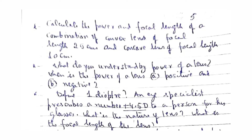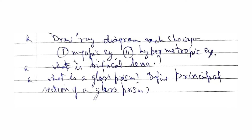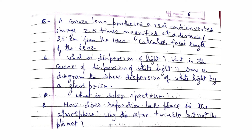A specialist prescribed +4.5 D lenses for a person — what is the nature of the lens and what is the focal length? Define myopia and hypermetropia: how are these defects of the eye caused and how can they be corrected? Define the power of accommodation of the human eye and the least distance of distinct vision. State the function of the following parts of the human eye: cornea, sclerotic, retina, iris, pupil, ciliary muscle, crystalline lens, vitreous humor, aqueous humor. Draw the ray diagram for a myopic eye and a hypermetropic eye. What is a bifocal lens? What is a glass prism and define the principal section of a glass prism?